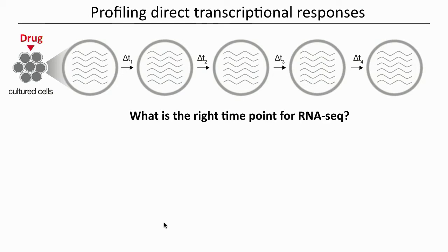First, I want to focus on using SLAM-Seq to profile direct transcriptional responses. Defining direct targets of transcriptional regulators that are modulated by drug treatment is critical both for understanding the basic cellular function of transcription factors and for therapy development. This is becoming more relevant since epigenetic regulators are emerging as accessible entry points for targeted cancer therapy, as exemplified by recent results on BET bromodomain inhibitors. In principle, this seems straightforward using standard RNA sequencing — one just has to define the right time point to perform sequencing.